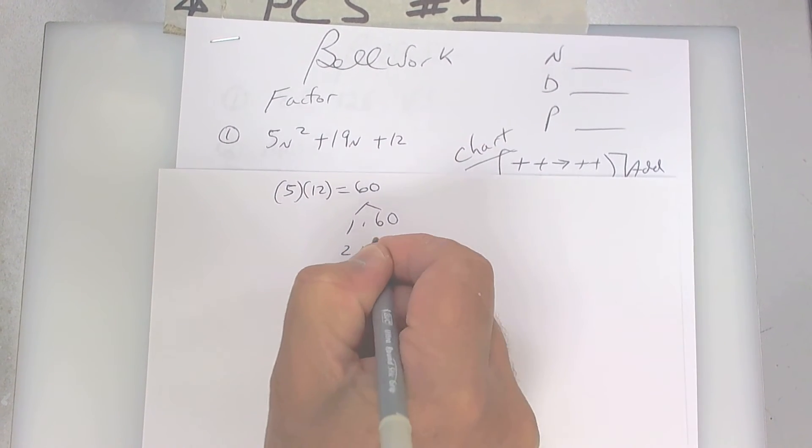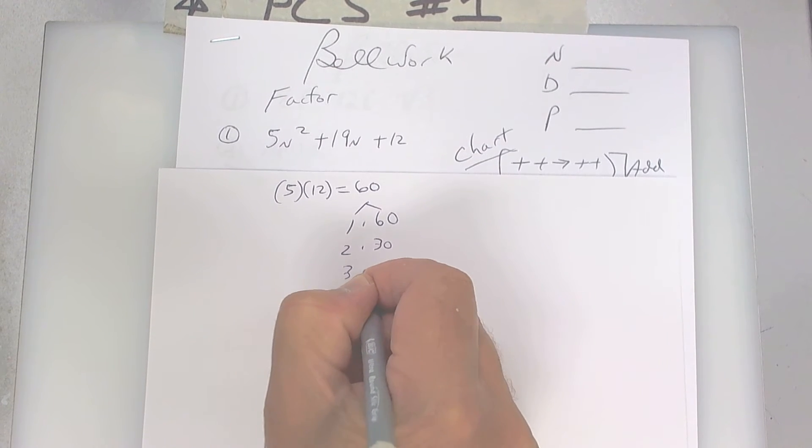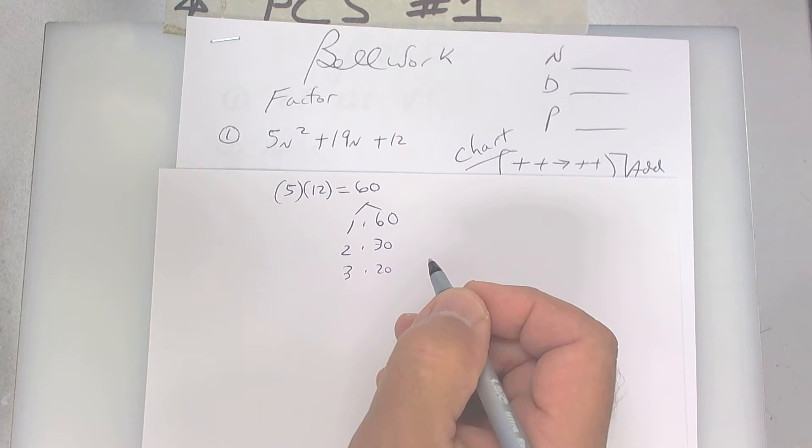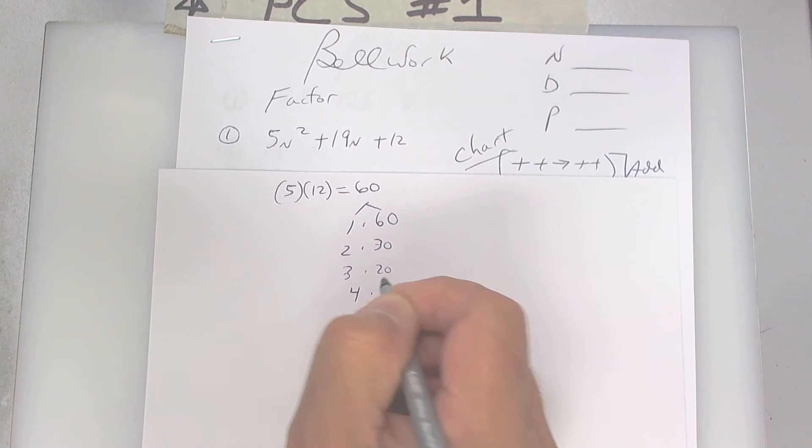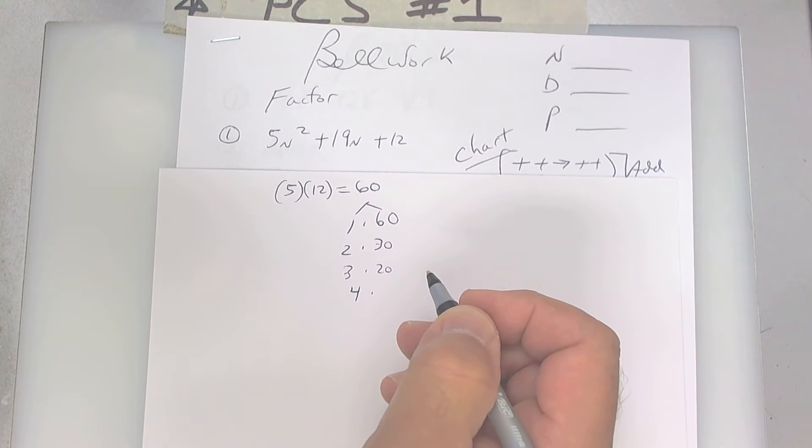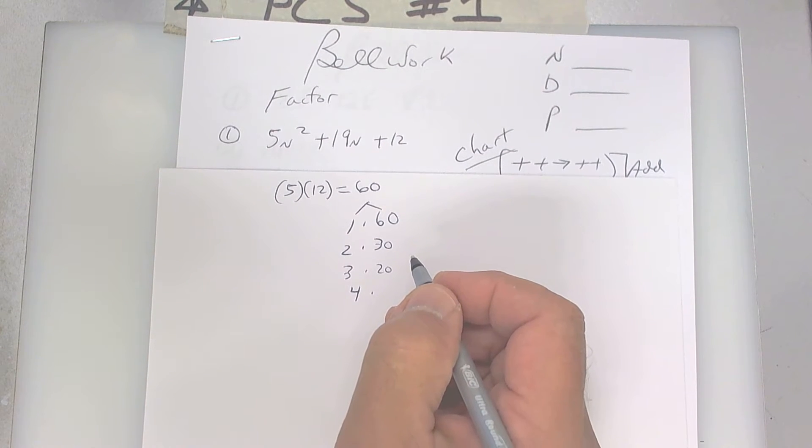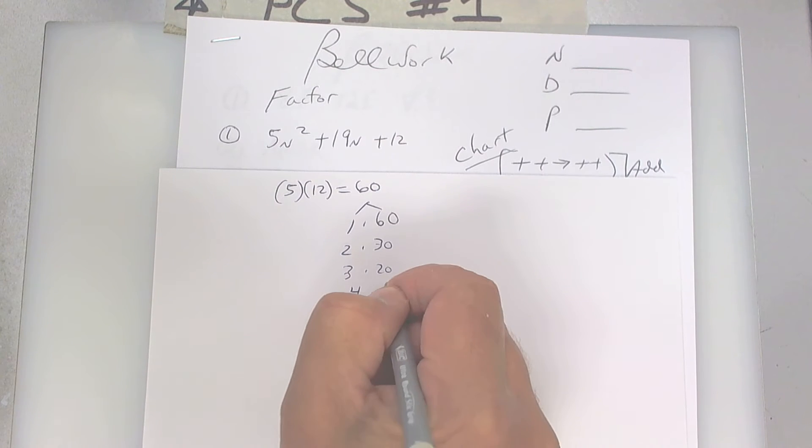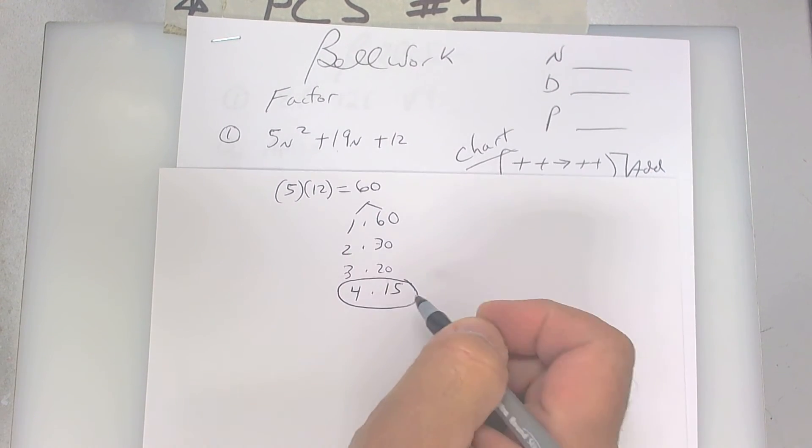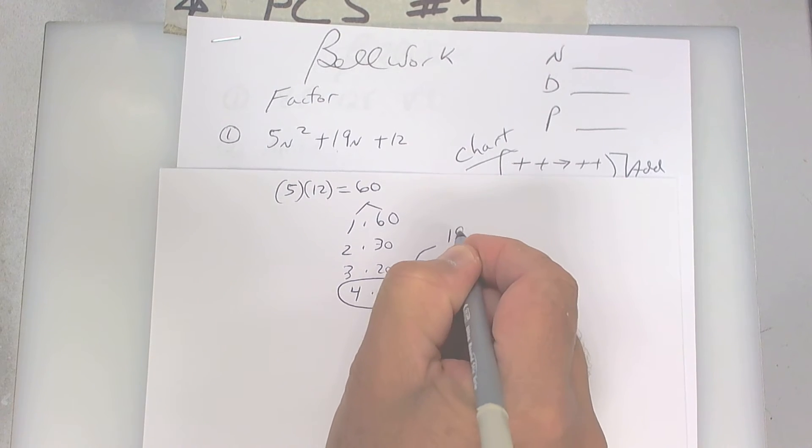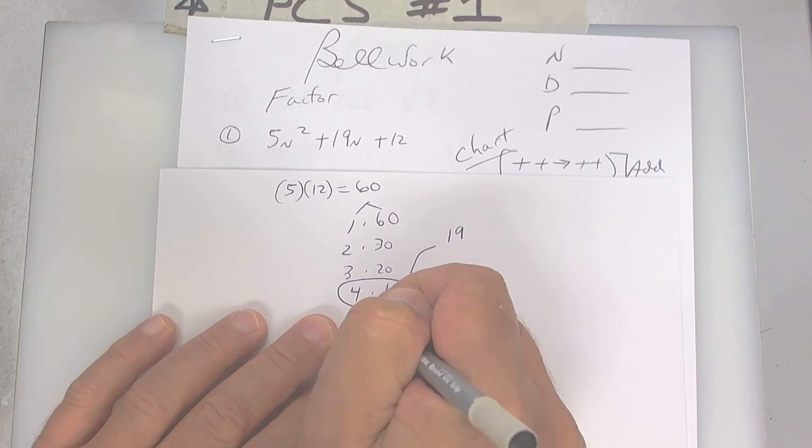One times 60, two times 30, three times 20. Let's see, four times something. Let's see what that is. That's probably my answer. I think it's 15, so 60 divided by 4 is 15. That's going to actually give me my answer. I'm looking for something that's going to add to give me 19, and this will add up to 19.